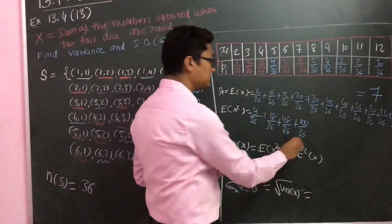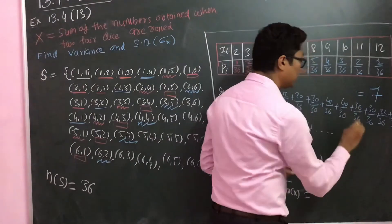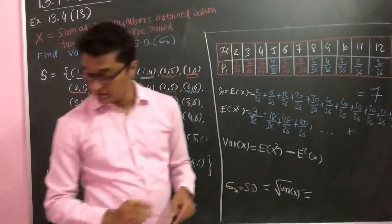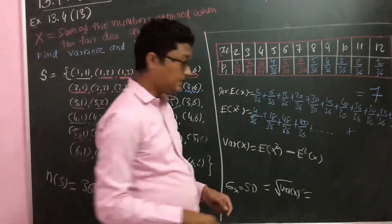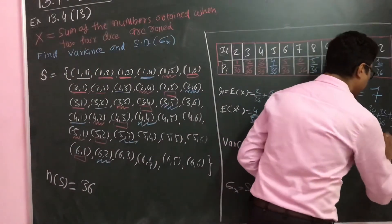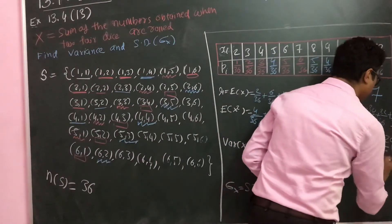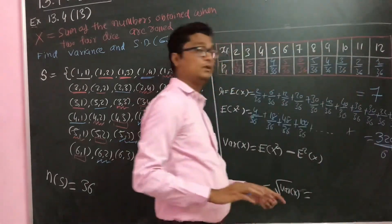Similarly, you keep on doing this. You have to calculate and then add. The answer you will get is 329 by 6.